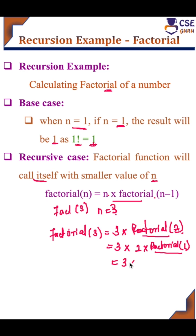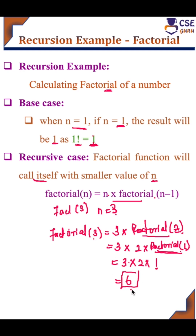So we have 3 into 2 into 1, and the result of this function is 1. When the recursive function meets the base case, it returns the result directly. The base case is when n equals 1, so it returns 1, and the final answer you get is 6 — factorial of 3 is 6. To summarize: base case is n equal to 1; n greater than 1 is the recursive case, implemented as n into factorial of n minus 1.